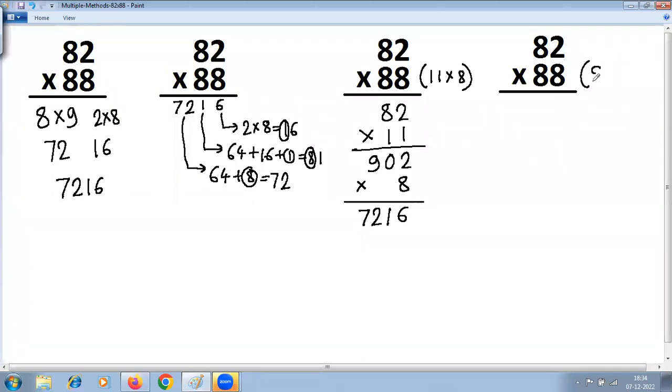So first we have to do 82 multiplied by 99 and then subtract 82 into 11. Let's do 82 multiplied by 99. This is series of 9.